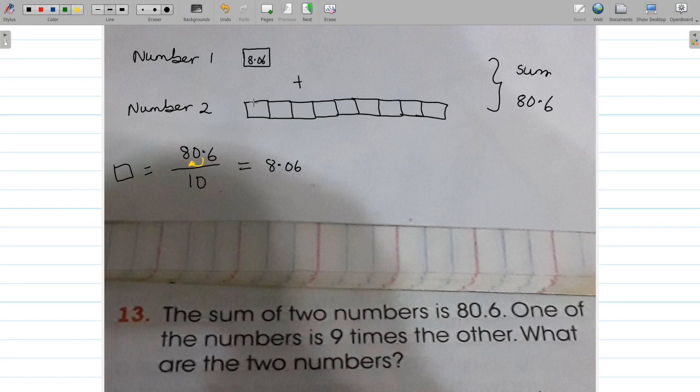It means then that each of these here is also 8.06. Yes, 8.06, each one of these represents 8.06 down the line.